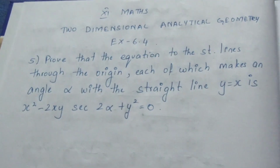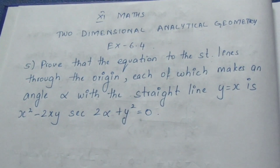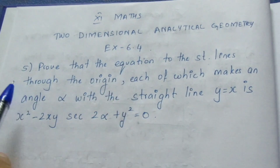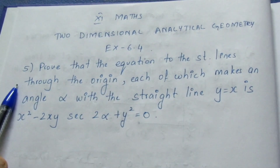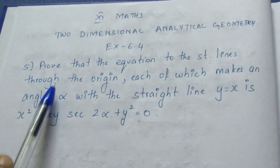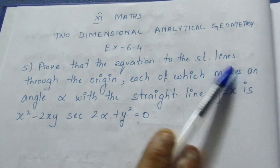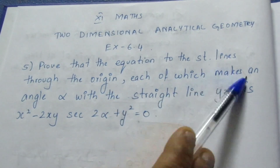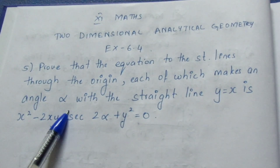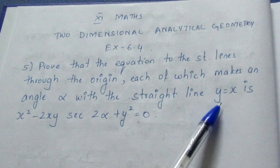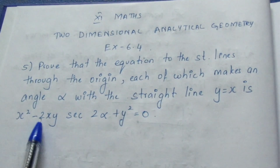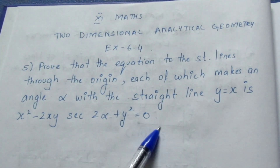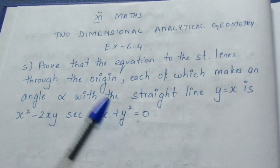Hello viewers, I am Ithli. In the 11th Maths, 2 Dimensional Analytical Geometry Exercise 6.4, 5th sum. The question says: show that the equation of the straight lines through the origin, each of which makes an angle alpha with the straight line y = x, is x² - 2xy·sec(2α) + y² = 0. We are going to prove this.